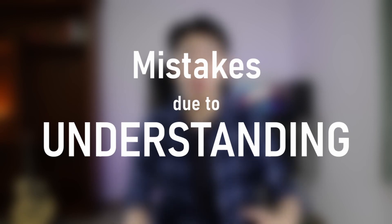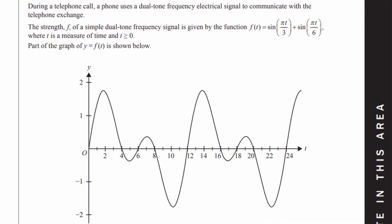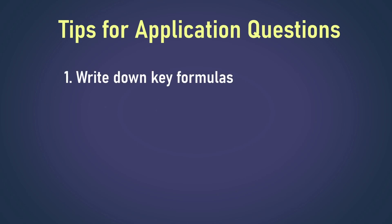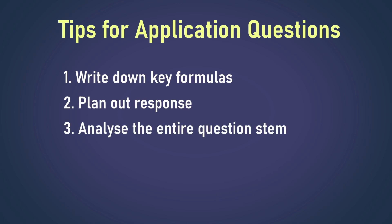Finally, mistakes due to understanding. This is where we get a question wrong because we don't see the connections between different concepts, which is common in application-style questions. This was definitely one of the harder mistakes to fix, but not impossible. These questions often rely on fundamental concepts, so make sure to write down any key formulas you need. Also, plan out your response on a scrap piece of paper and write down any thoughts or approaches that may work. Sometimes the key is to just start with a basic idea and see if you can build from there. Analyze each section of the question — sometimes it's background information, but other times you can convert it into a maths concept.